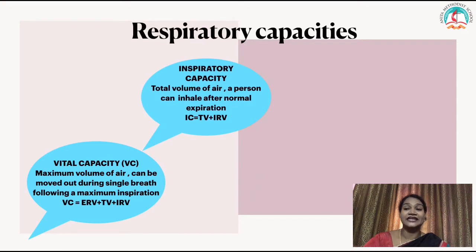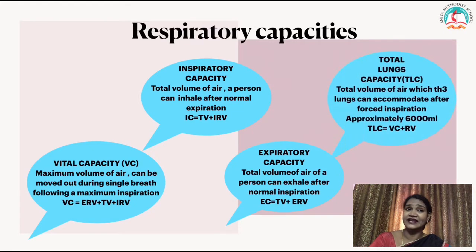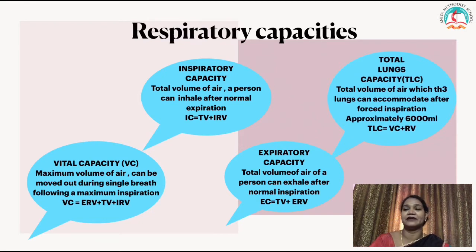Next is expiratory capacity: the total volume of air a person can exhale after normal inspiration, which equals TV plus ERV. Finally, total lung capacity (TLC): the total volume of air the lungs can accommodate after forceful inspiration, approximately 6000 ml. TLC equals VC plus RV — the sum of all respiratory capacities of our lungs.